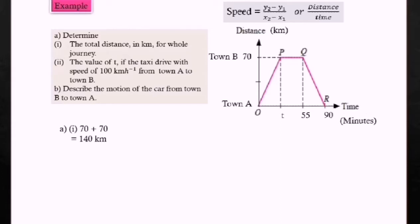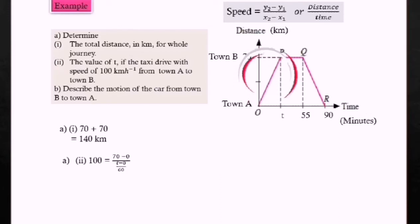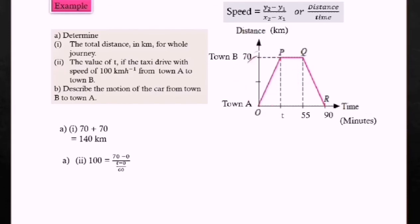Find the value of T if the taxi drives at a speed of 100 kilometers per hour from town A to town B. So 100 equals 70 over (T minus 0), but note the unit is in minutes, so we divide by 60 to convert to hours. This gives 100 times T over 60 equals 70, so T over 60 equals 70 over 100, giving T equals 70 over 100 times 60, so T equals 42 minutes.